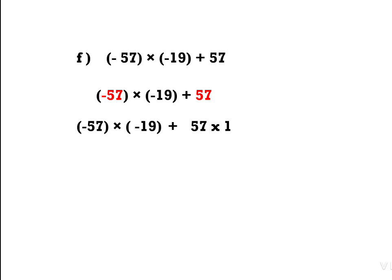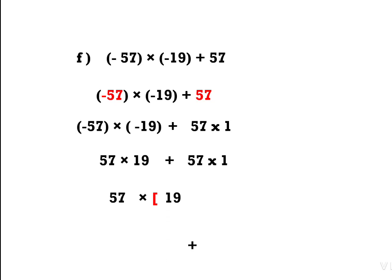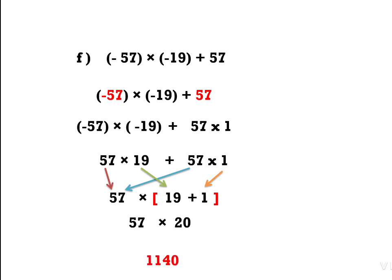So: (−57) × (−19) — two negative numbers, two is even, so it should be positive — we write 57 × 19. Plus 57 × 1. Now 57 is written outside the bracket: 57 × (19 + 1) = 57 × 20 = 1140. These are the methods of multiplication by using properties, specifically the distributive property.